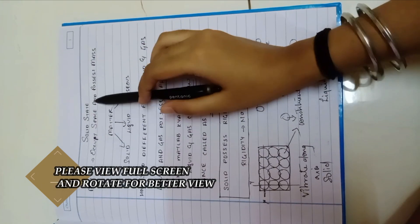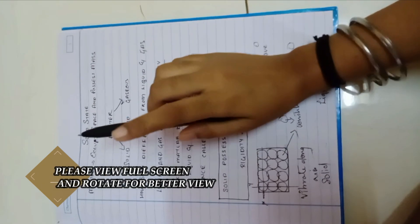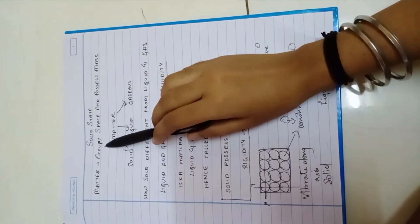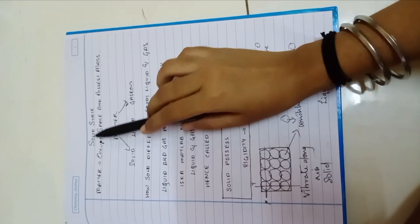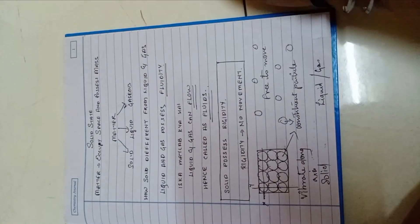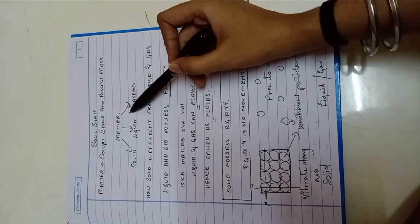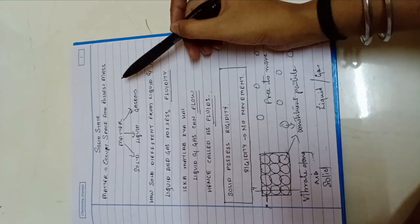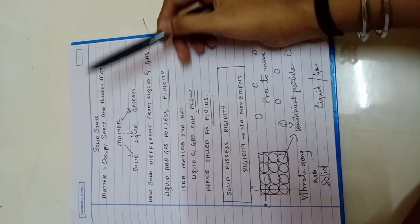Starting up with the chapter on solid state, the very first chapter of 12th standard chemistry. Solid is one of the states of matter. Now what is matter? Matter is something that occupies space and possesses mass. So there are three states of matter: solid, liquid, and gaseous.